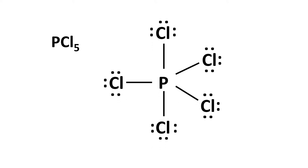They have the ability to have more than 8 electrons because they have empty d orbitals available to accommodate the extra electrons. Let's have a look at some examples of expanded octet. In the first one, we have PCl5. Phosphorus is the central atom, and it has 10 electrons — more than 8.